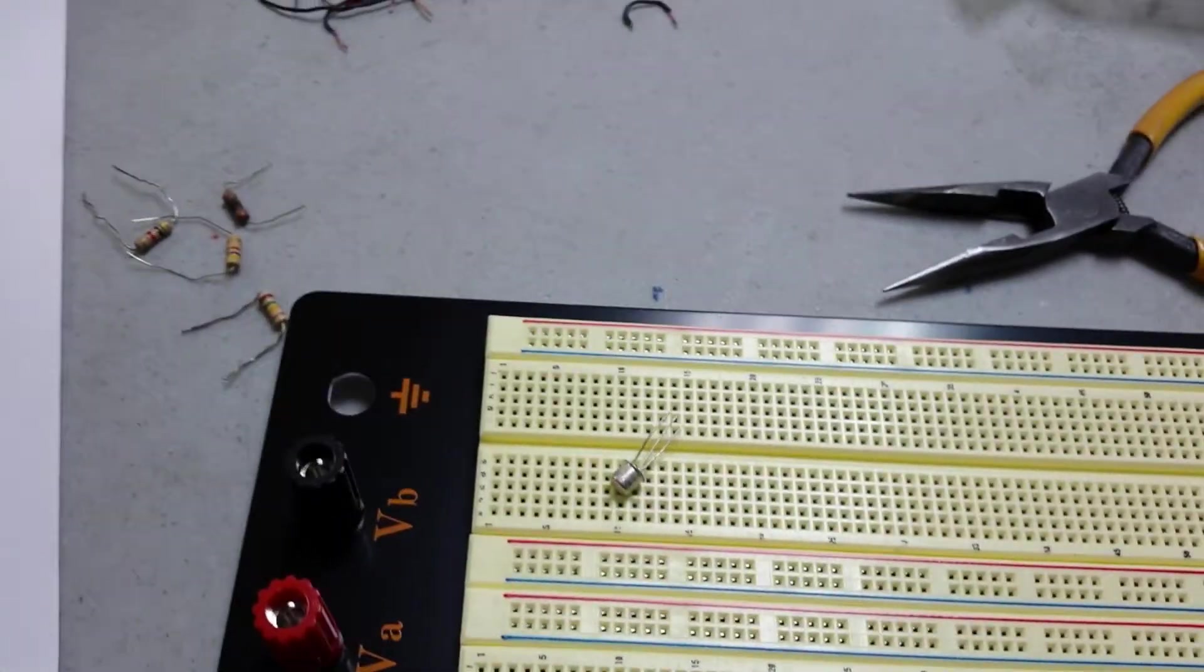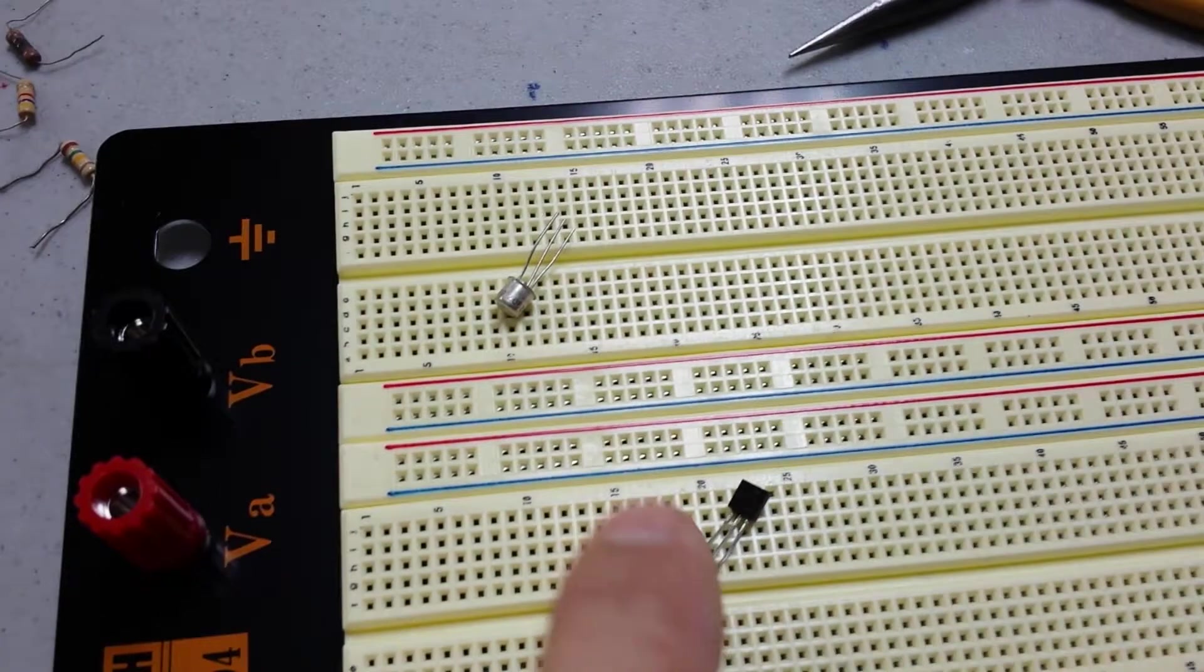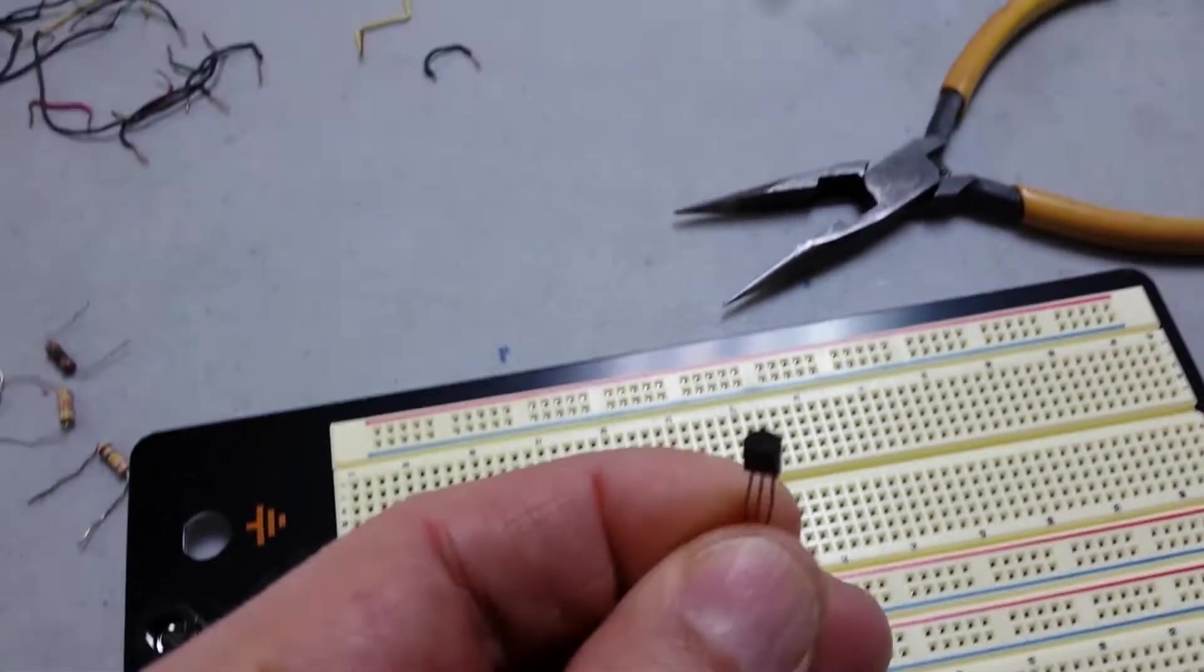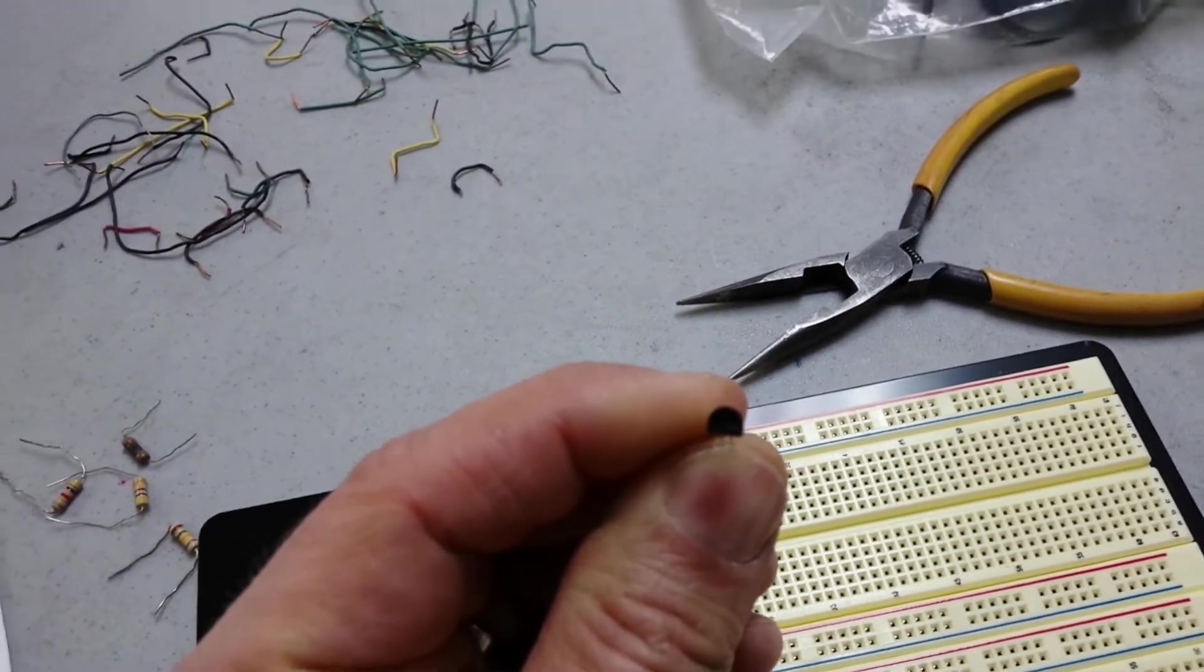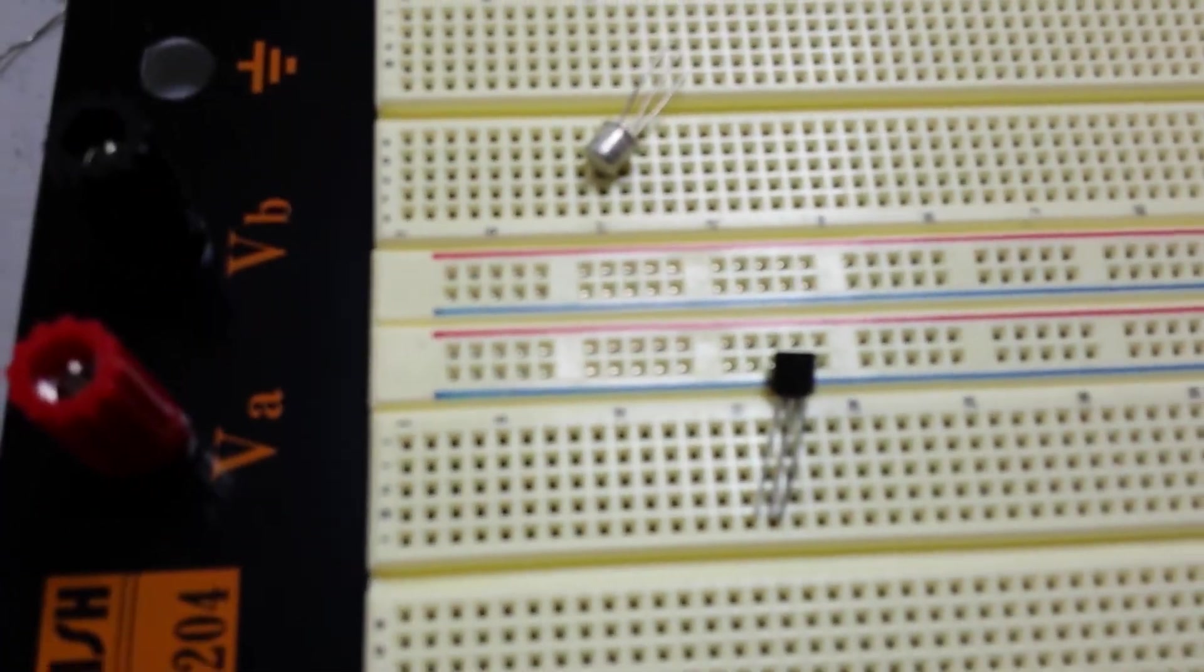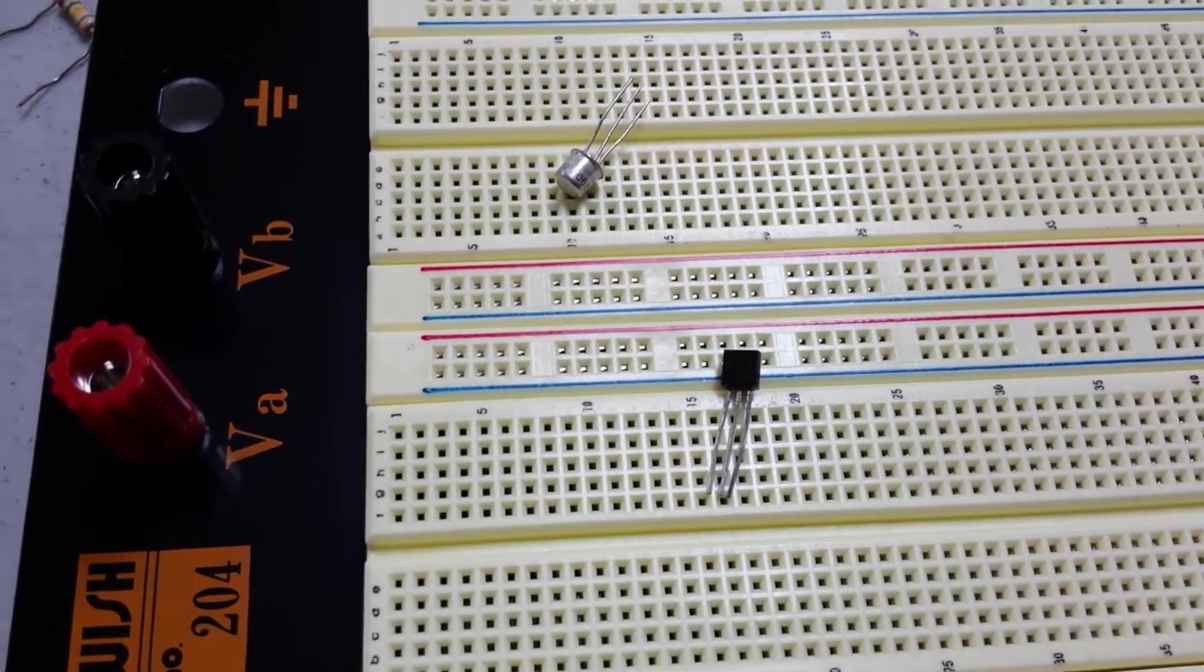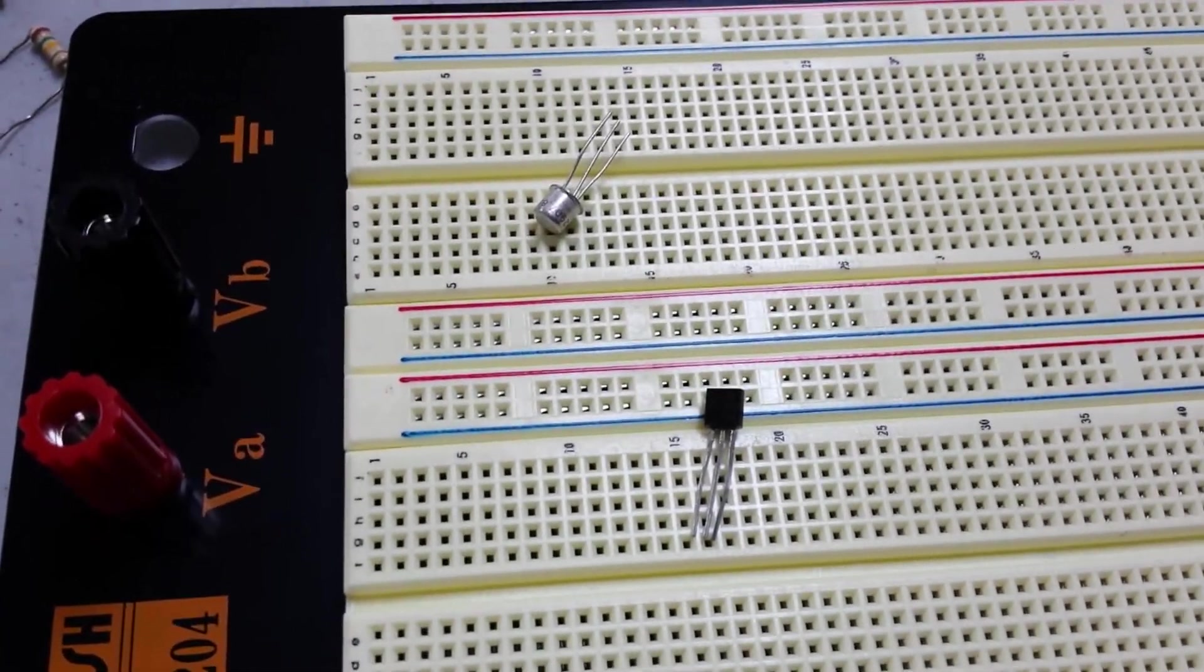If I'm asking you for the 3904, well then we're looking at this guy here with the plastic canister. This one here, it's a half circle, so you have a flat side right here. So on the flat side, the pin on the left-hand side would be the emitter, followed by the center one, which is the base, and the one on the right-hand side, which is the collector.